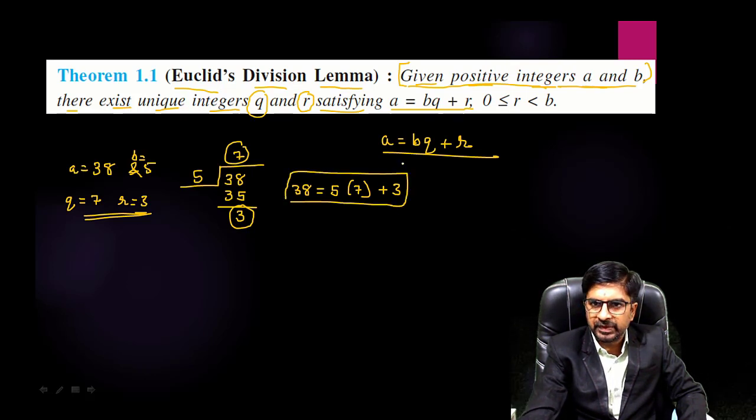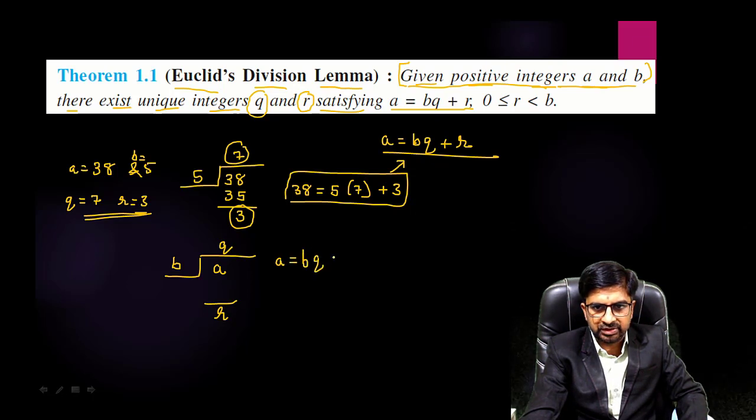A equals this, so this is the same form as Euclid's division lemma. Here we are getting integers, here they are taken variables. Let me write down: this term is your a, your divisor that is b, your quotient that is q, and the remainder is r. So you can write this as a = bq + r.